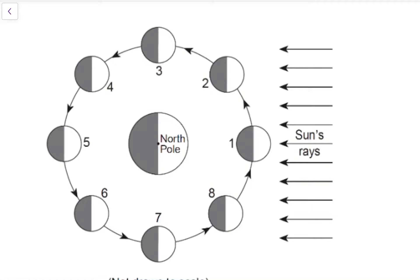So here we can see a diagram. In the center here is the earth. This smaller object revolving around the earth is the moon, shown at eight different positions.